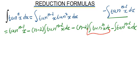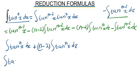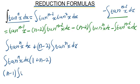It's just a matter of collecting like terms. We have the integral of tan^n(x) dx, plus (n-2) times the integral of tan^n(x) dx. Factoring out the integral of tan^n(x) dx, we get the coefficient 1 + (n-2), which equals n-1. So we have (n-1) times the integral of tan^n(x) dx on the left side.